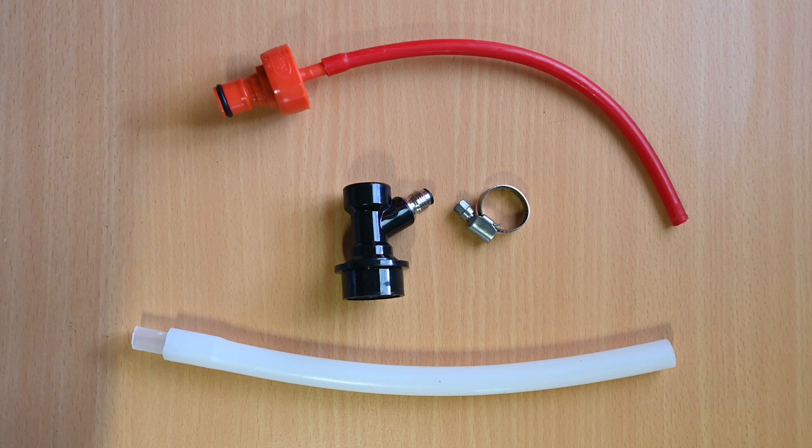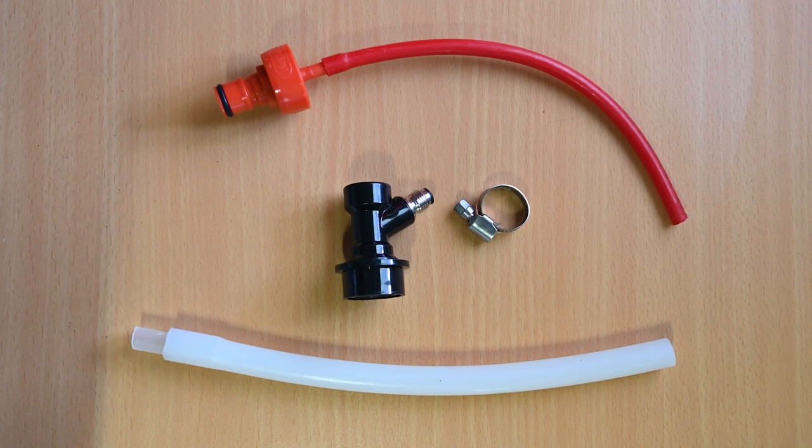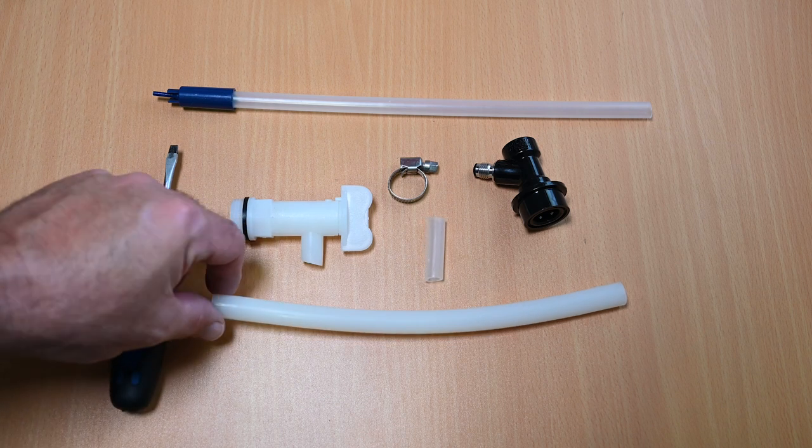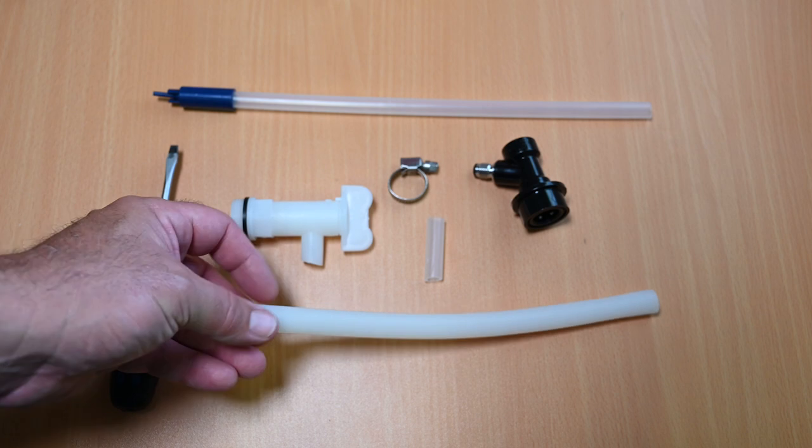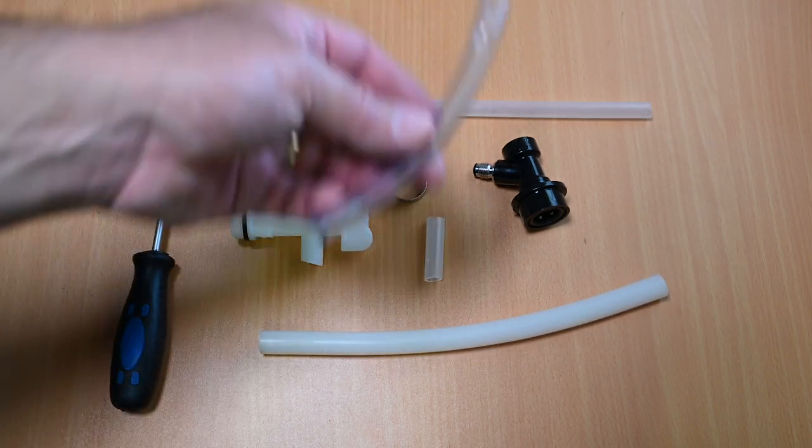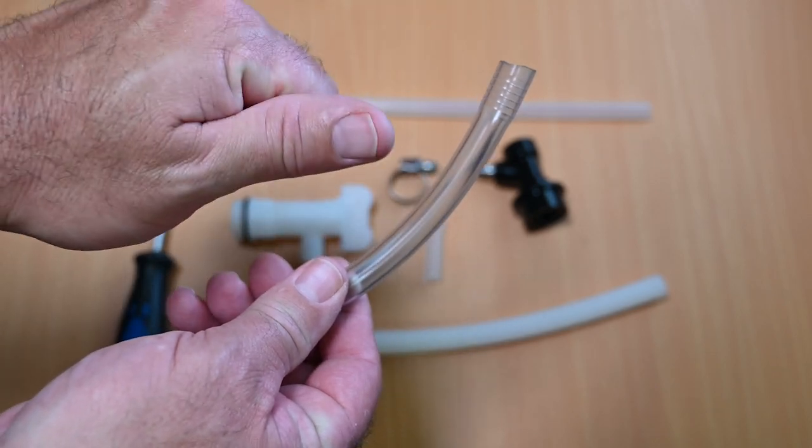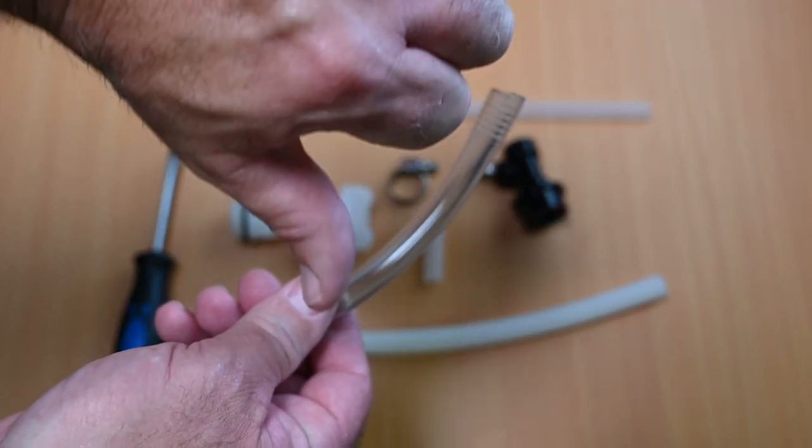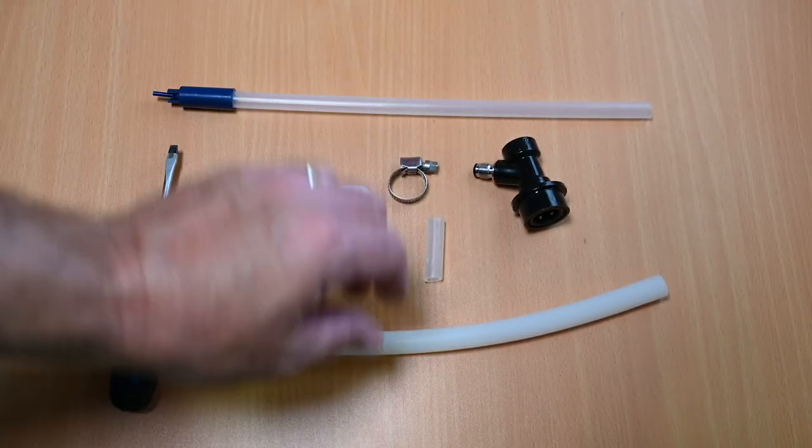The first thing we're going to need is some silicon tubing. I've got a short length of 10 millimeter internal diameter silicon hose. Now I prefer to use silicon when it comes to transferring beer in my brewery. I don't like using vinyl, and if you've ever stuck your nose in the end of a vinyl tube you'll know why. They just smell plasticky and that is going to get into your beer, so stick to silicon.